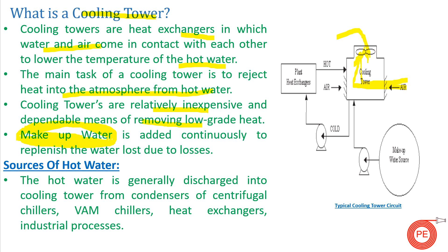From where does hot water come into your cooling tower? Hot water is generally discharged into the cooling tower from condensers of centrifugal chillers, VAM chillers, heat exchangers, and industrial processes. Because of water scarcity, we can't waste water — hot water from the process comes into the cooling tower, gets cooled, and cold water is again circulated into the system. This is a complete closed cycle where the temperature of hot water is lost with the help of cold air through the cooling tower.